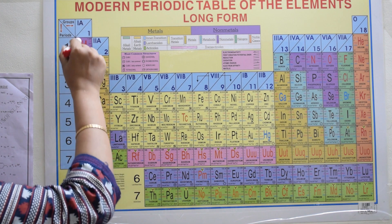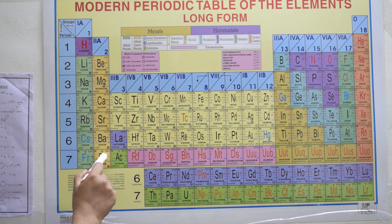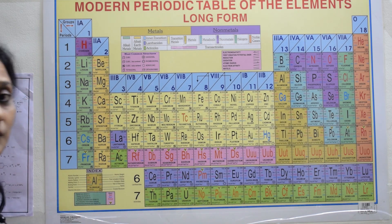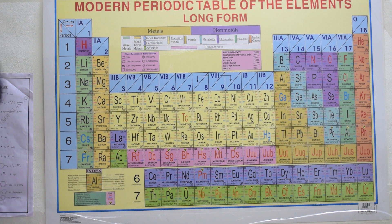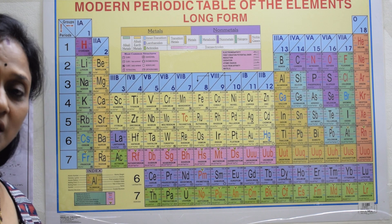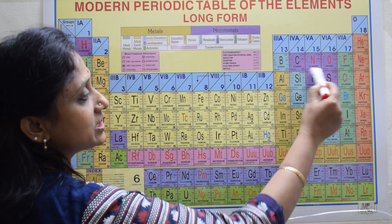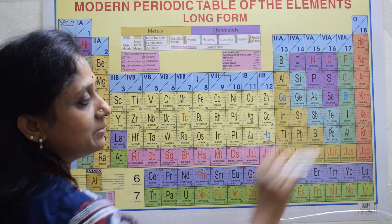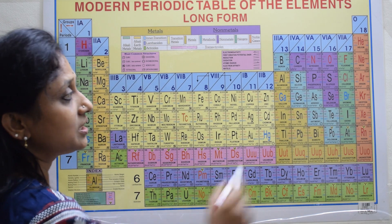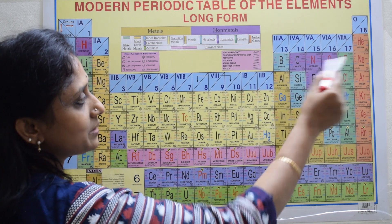The properties of all elements within a block are similar. After understanding horizontal rows, vertical columns, and s, p, d, f block divisions, the next important concept is metalloids — shown in purple color on the periodic table.